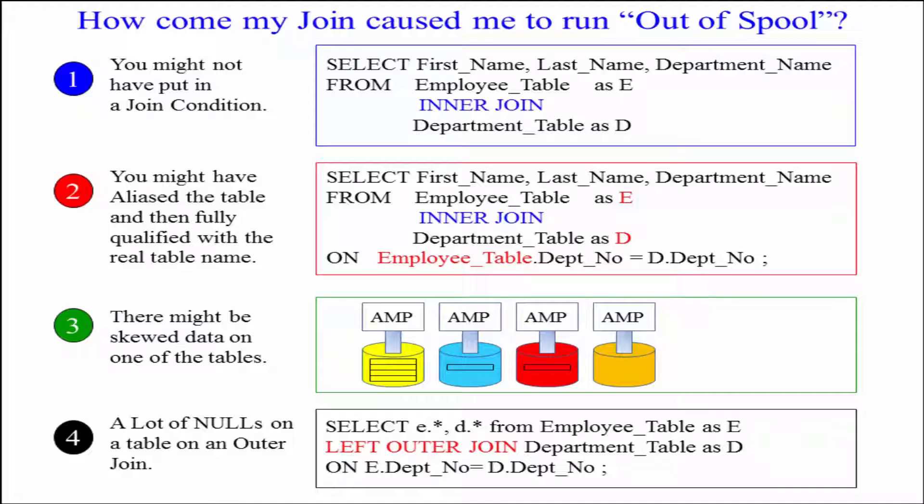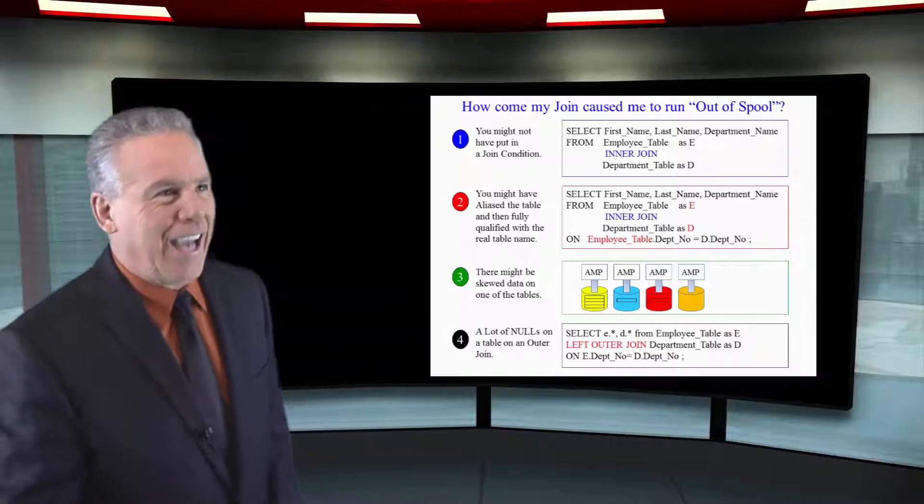Now, the biggest reason you're going to run out of spool is because the data is skewed. You're going to go over your per amp limit and goodbye.